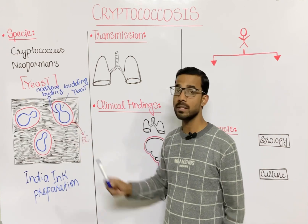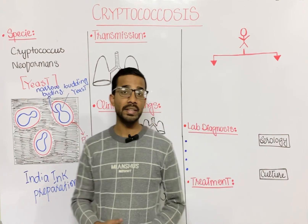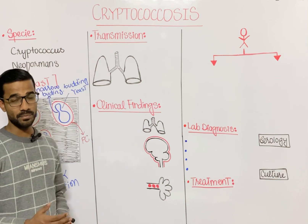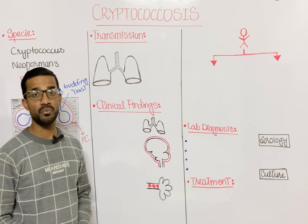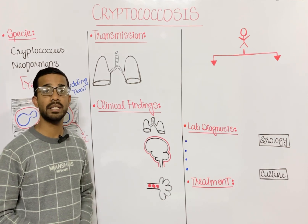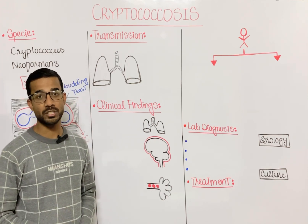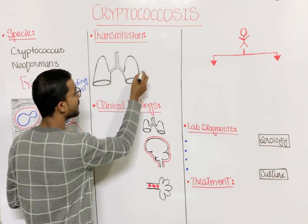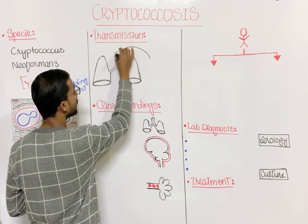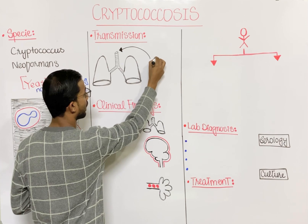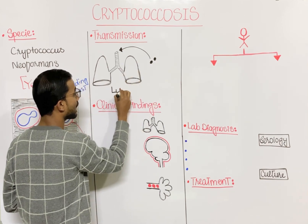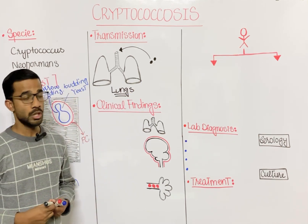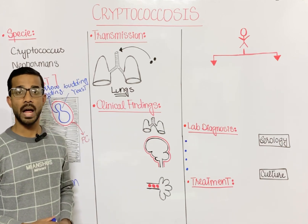Regarding transmission, Cryptococcus neoformans grows very well in soil contaminated with bird droppings, especially pigeons. From the soil, the organism enters our body through the respiratory system. The first organs affected by Cryptococcus neoformans are the lungs, so the first symptoms will be related to the lungs.